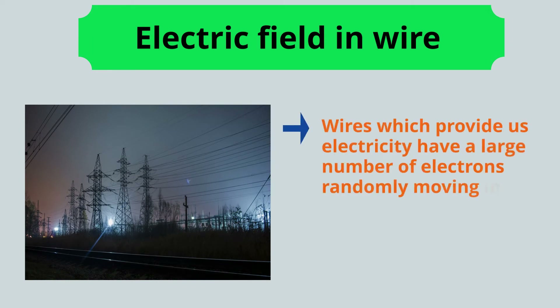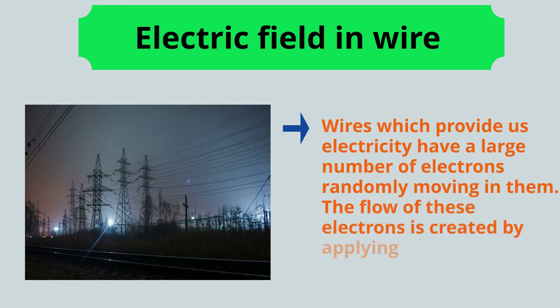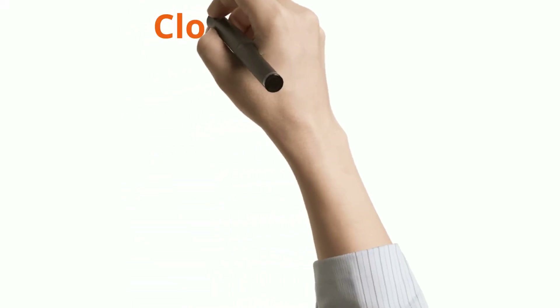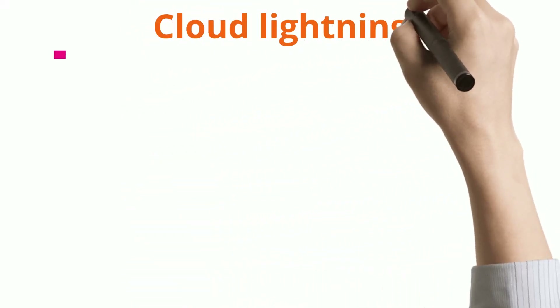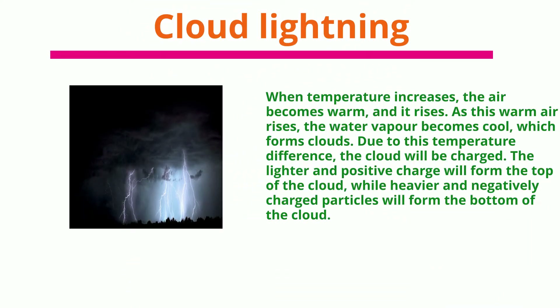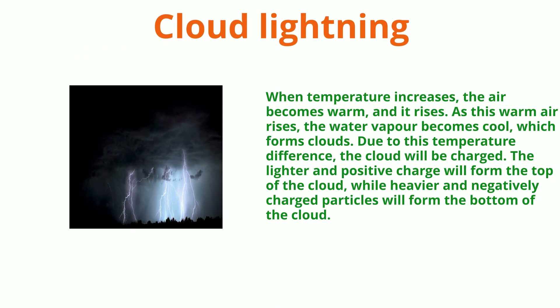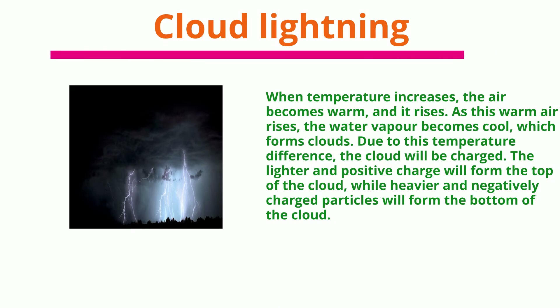Wires that provide us electricity have a large number of electrons randomly moving in them. The flow of these electrons is created by applying an electric force.